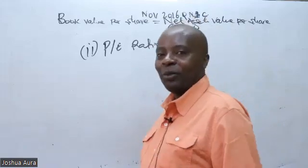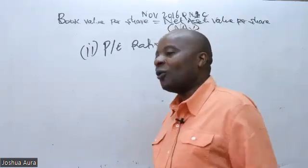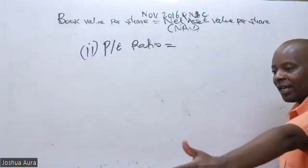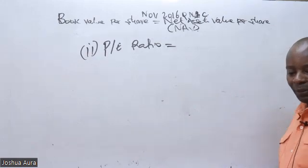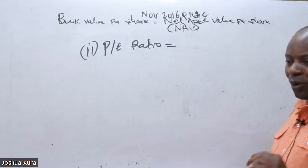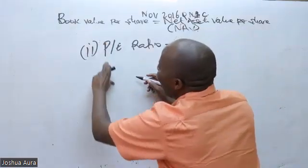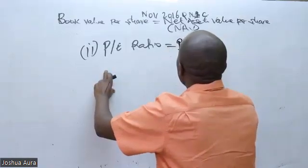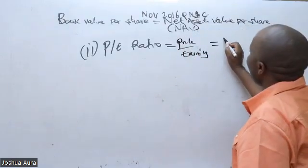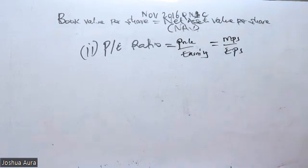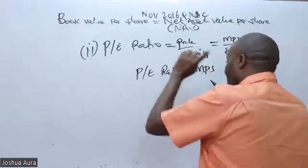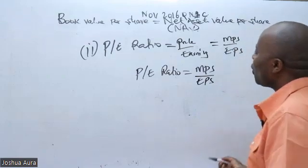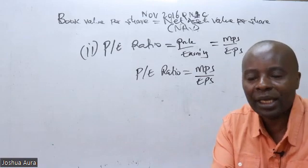The first thing I need to do is remember the formula for PE ratio. How do we compute the PE ratio? PE ratio is price over earnings — this is MPS over EPS. Anytime they tell me to give them PE ratio, I work with MPS at the numerator over EPS at the denominator. This examiner wants me to get MPS, so I make MPS the subject of the formula: MPS equals PE ratio times EPS.